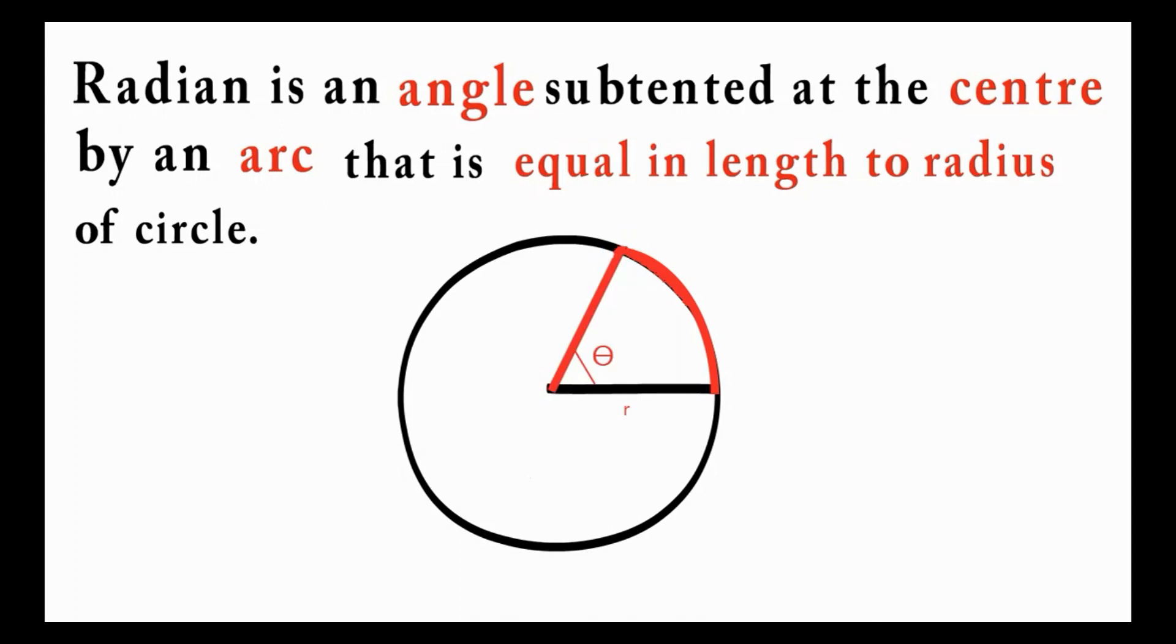Here theta is a particular angle where the arc length is equal to the length of radius. This theta has covered the length of one radius, hence the angle theta is one radian.